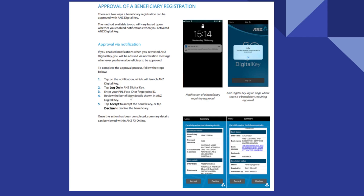Now, review the beneficiary details shown in ANZ Digital Key. After that, tap on Accept to accept the beneficiary or tap on Decline to decline the beneficiary.